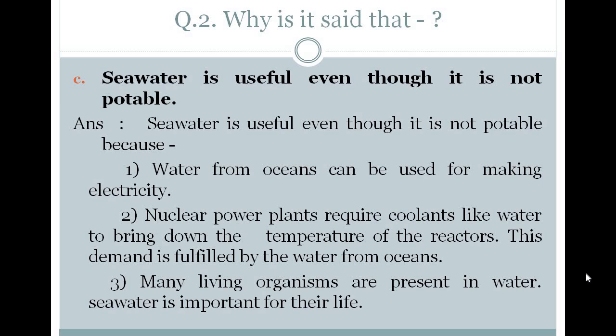Nuclear power plants require coolant like water to bring down the temperature of the reactors. This demand is fulfilled by water from the oceans. In factories where nuclear reactions take place, a great amount of heat is released. To reduce that temperature, coolant is required — just like pouring water on a hot pan to cool it. Here, sea water is used to cool nuclear reactors.